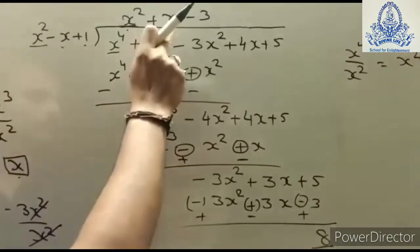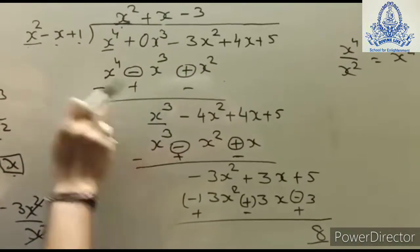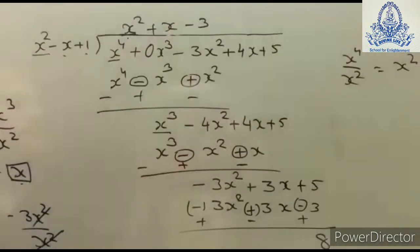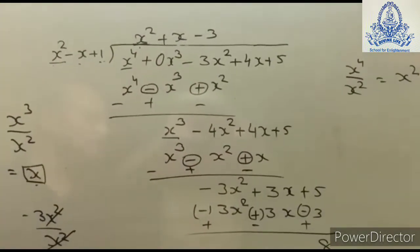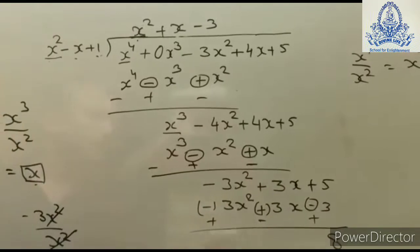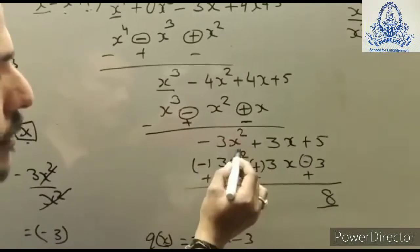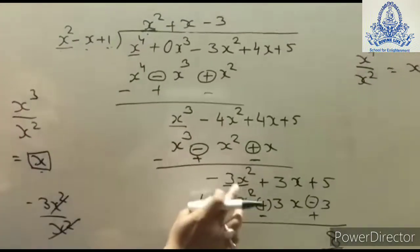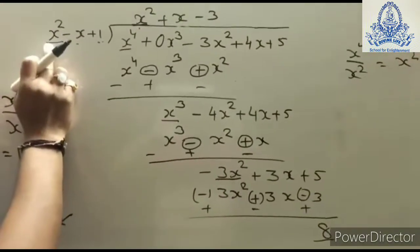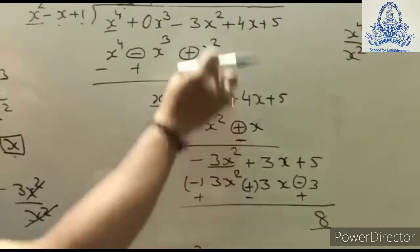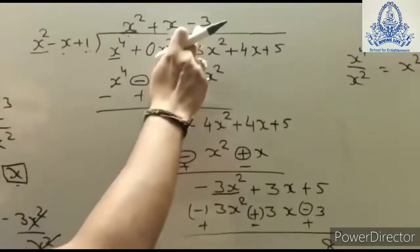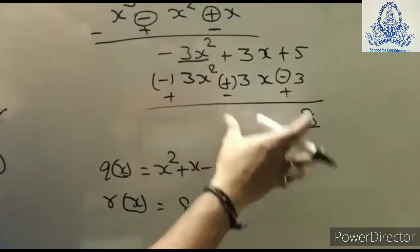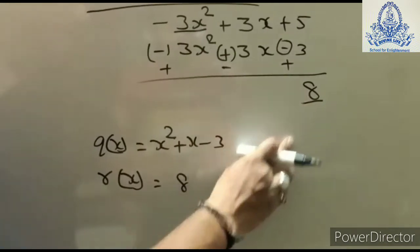For the next step, x³ ÷ x² gives x, which becomes the next term of the quotient. Multiply x with all terms of the divisor and subtract again. The first term of the next dividend divided by x² gives −3, the third term of the quotient. Multiplying −3 with all terms of the divisor and subtracting gives 8 as the remainder.